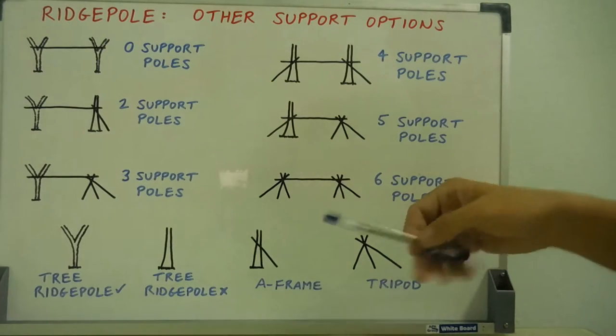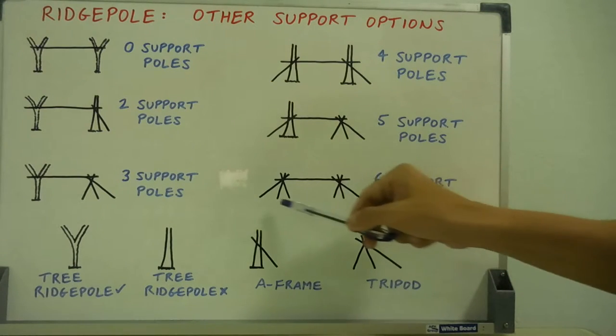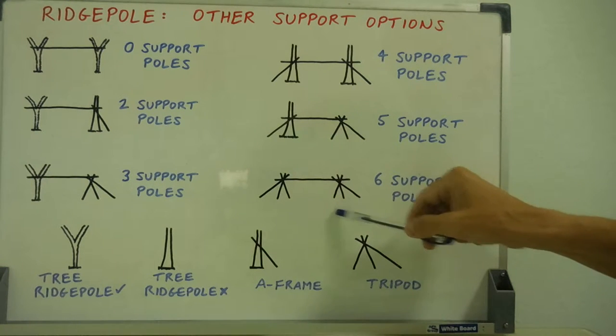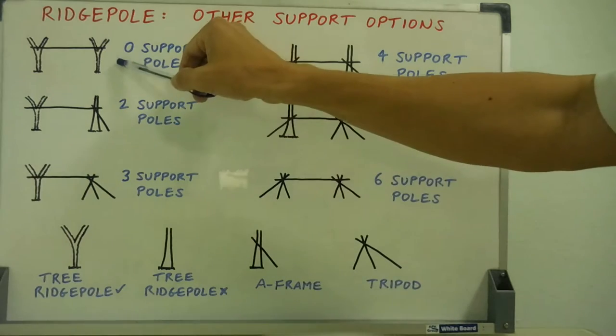The other extreme was my step five full pen shelter with two tripods. That's obviously six support poles to make two tripods, the most work to the least work.